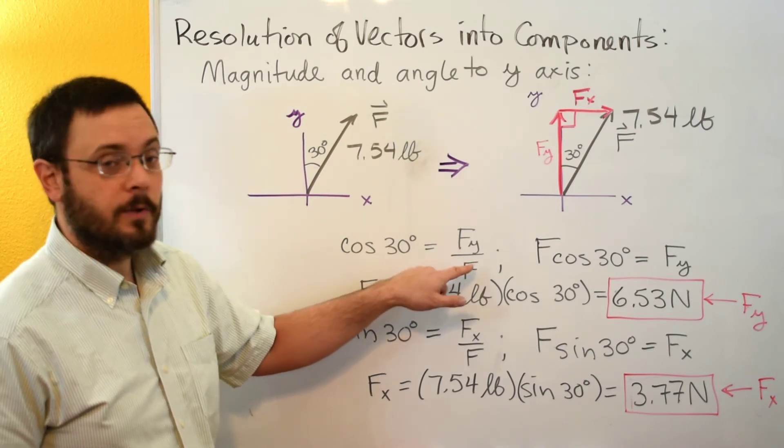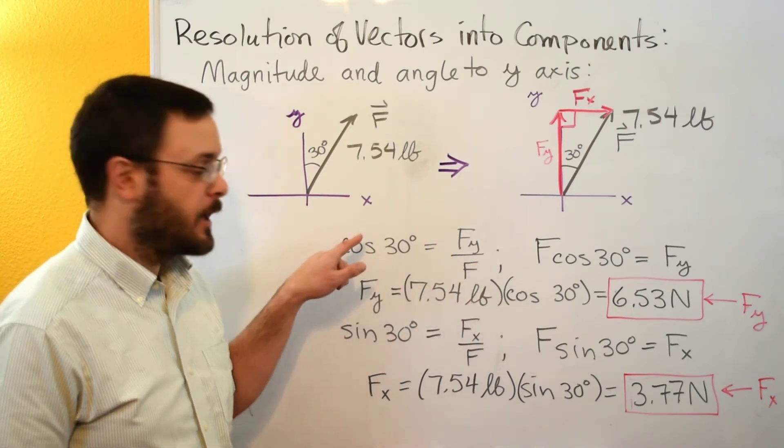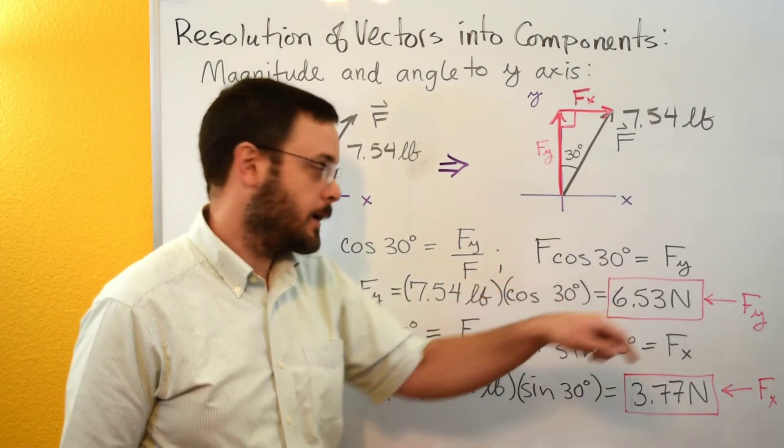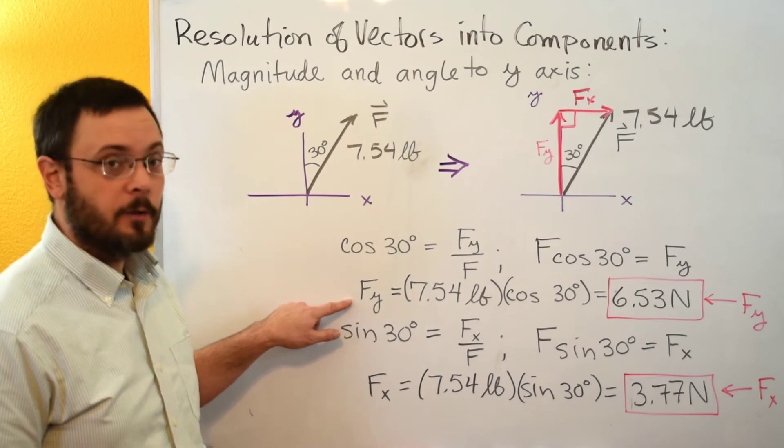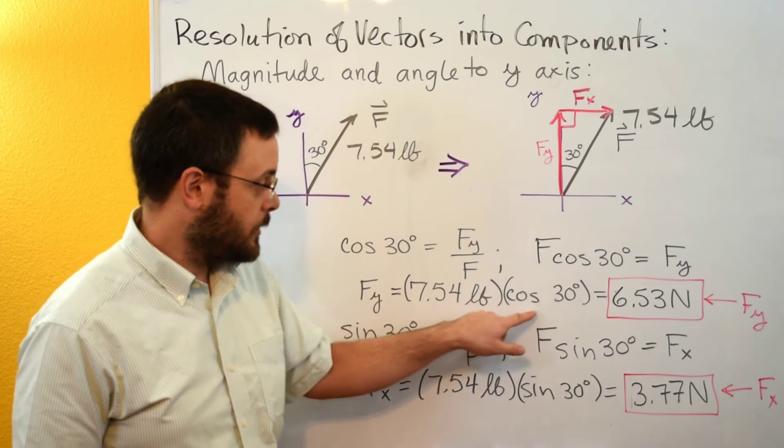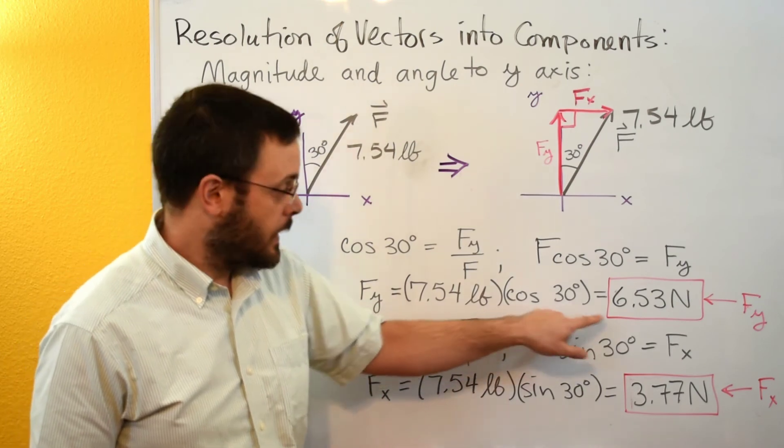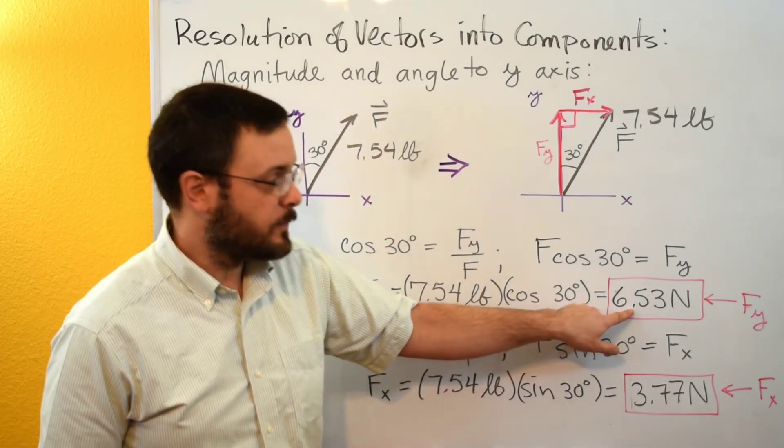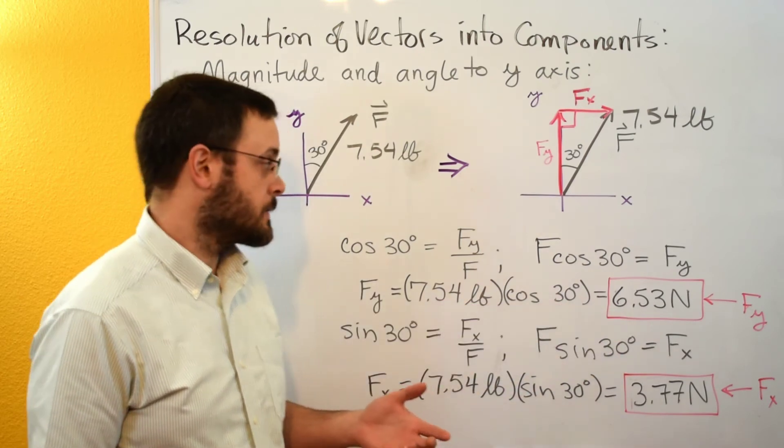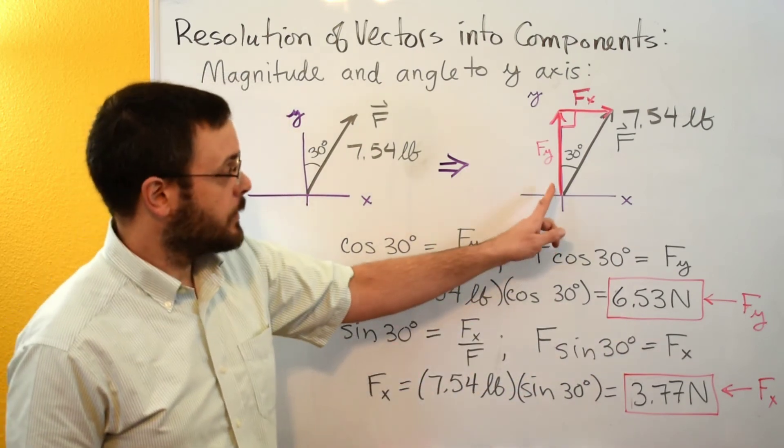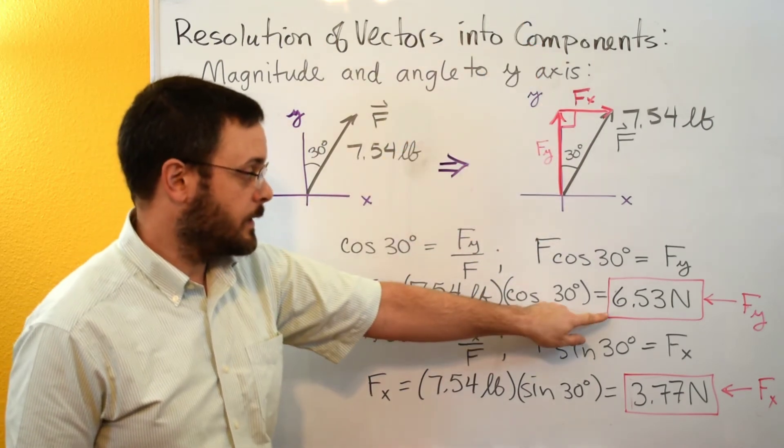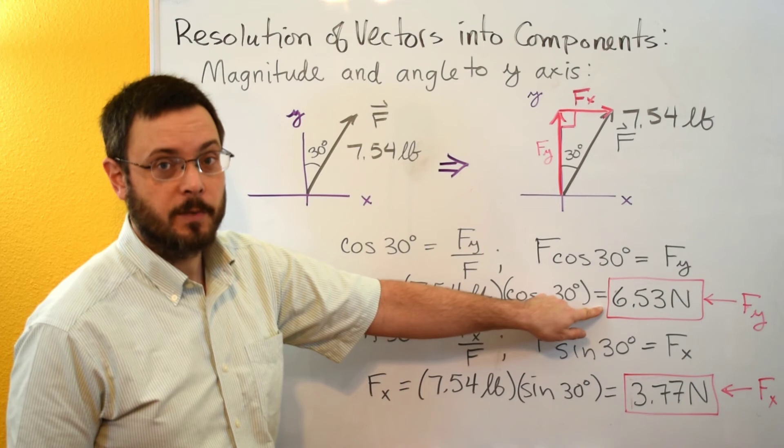We can similarly rearrange this by multiplying by f and that'll give us f cosine of 30 degrees is equal to fy and then we can solve for fy by plugging in our numbers 7.54 pounds for f and then cosine 30 degrees and that gives us 6.53 Newtons. Remember that we also have to check our directions. So in this case our y component looks like it's going in the positive y direction and so we leave this final result as being positive.